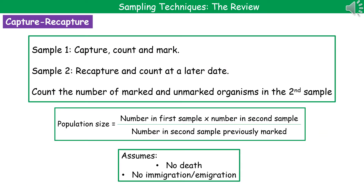One of the key techniques we need to describe is the capture-recapture technique. What we do is we go out and capture a sample, count them and mark them before releasing them. Then at a later date we go back to the same area and use the same technique to capture and count the sample once more. We'll have a number that are marked and a number that are unmarked in our second sample. To calculate the total population size, we do the number in the first sample times the number in the second sample divided by the number that were marked in the second sample.